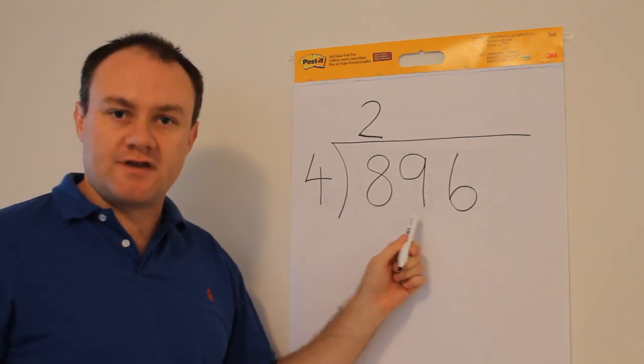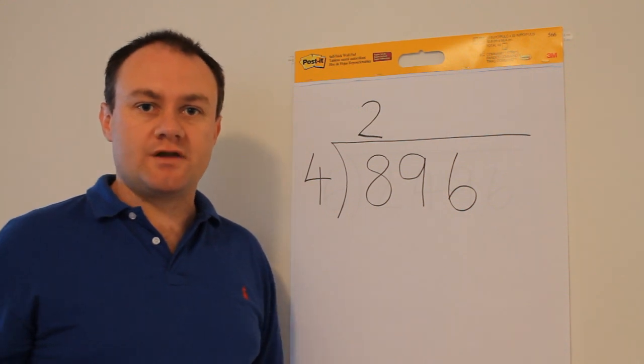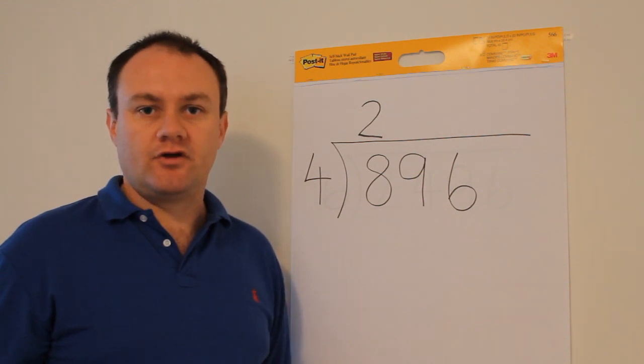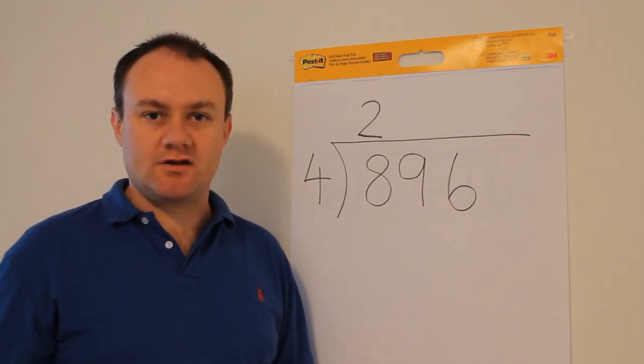Now I move along to the next digit. How many times does four go into nine? Well, it's going to go into nine twice and there's going to be one left over because two times four equals eight and that's one less than nine.